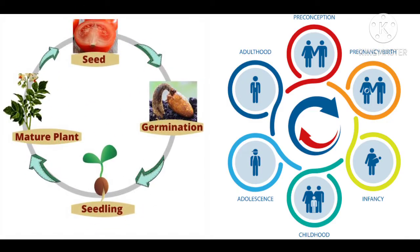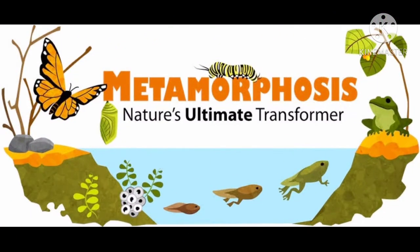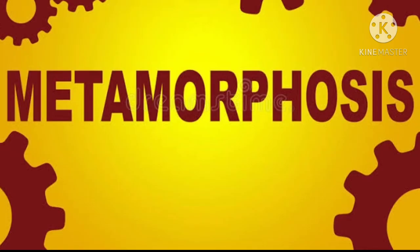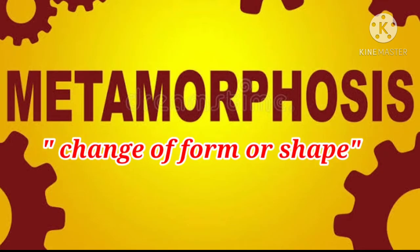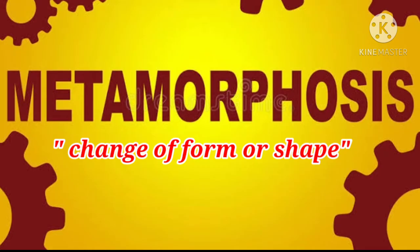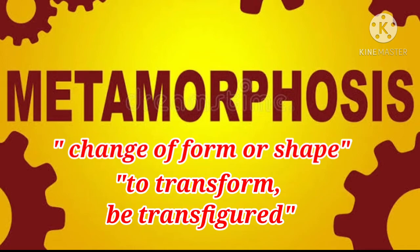All organisms have a life cycle, and this process keeps on repeating. They are born or hatch, then they grow and mature, reproduce offspring, and die. Insects and amphibians pass through stages in a life cycle called metamorphosis. It comes from a Latin word which means change of form or shape, and a Greek word which means to transform and be transfigured.